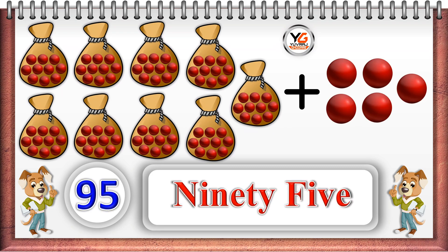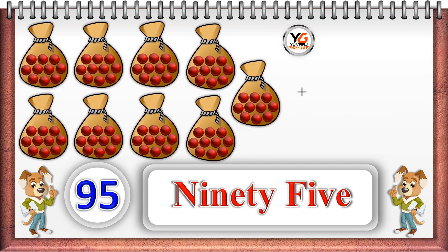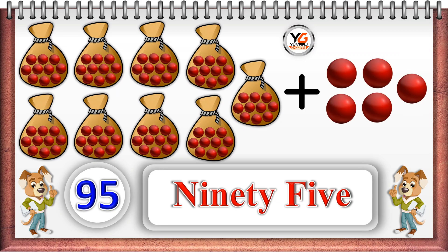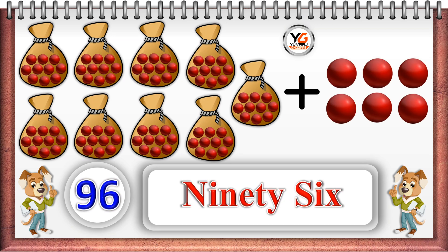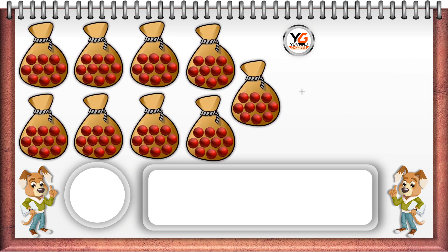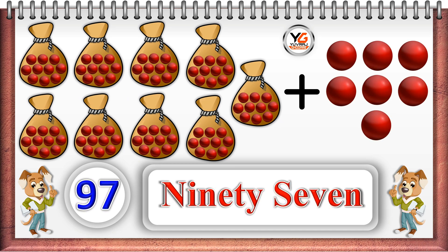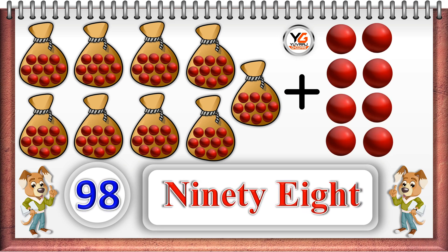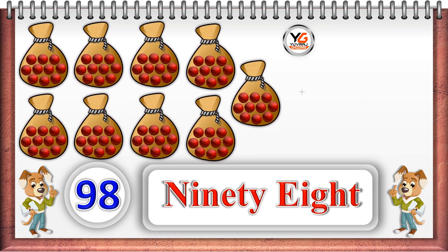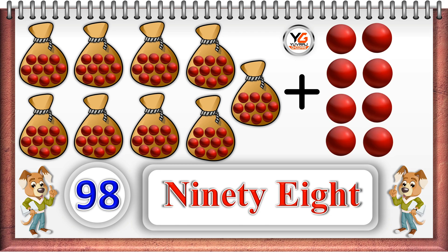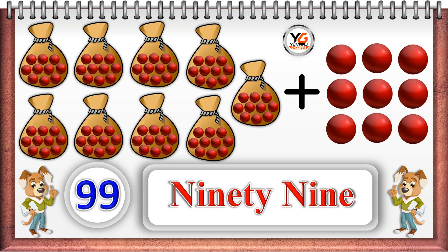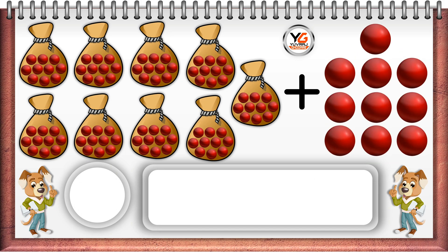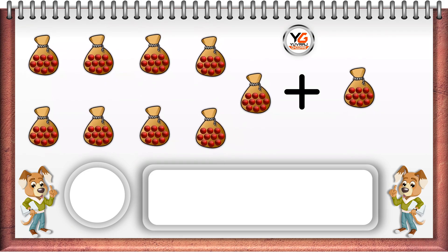Nine tenths and five units: 95. Nine tenths and six units: 96. Nine tenths and seven units: 97. Nine tens and eight units: 98. Nine tens and nine units: 99. Ten units means one 10: 10 tens: 100.